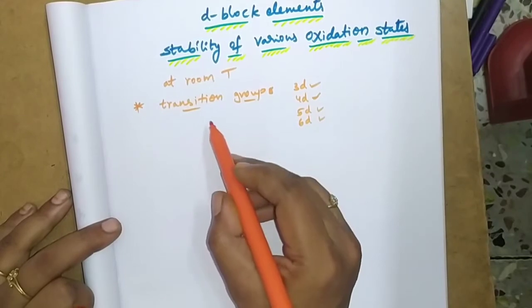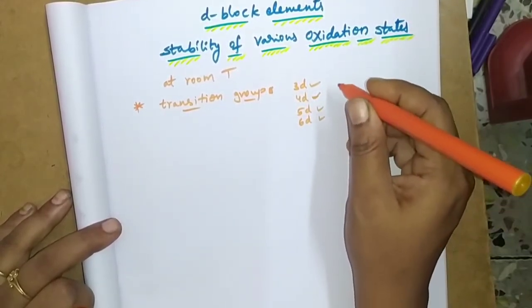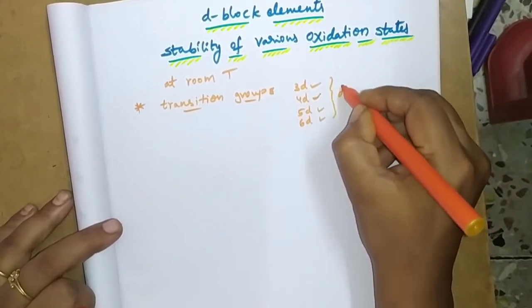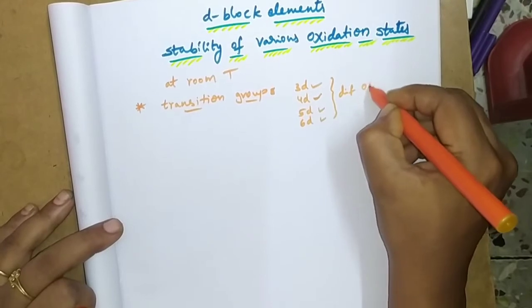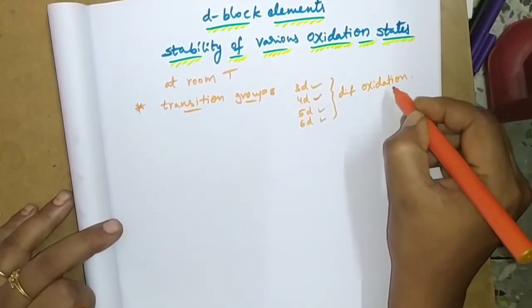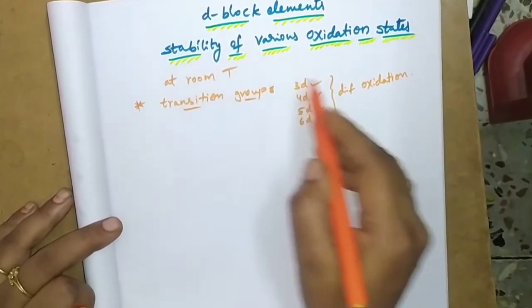Each group of series in the transition groups has a different stability of variable oxidation states. These are all having different oxidation states. Based on oxidation state, they have differences in stability also.